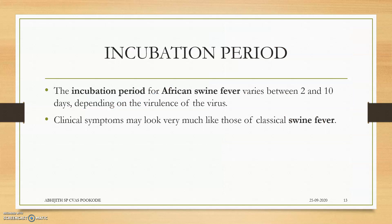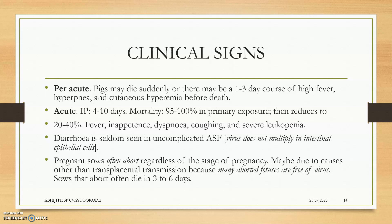Clinical signs occur in mainly three forms: per acute, acute, and subacute. In the per acute form, there is sudden death — 1 to 3 days after infection the animal shows small clinical signs of high fever, hyperpnea, and cutaneous hyperemia, followed by death within 1 to 3 days. It is a very short span of clinical signs.